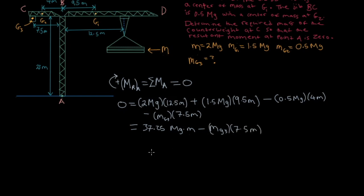So now all we have to do is rearrange. And what we get is mg3 is equal to 37.25 megagram meters divided by 7.5 meters. And that will give us 4.97 megagrams. So what this means is that if this counterweight was 4.97 megagrams, that will cause the resultant moment about point A to be zero.